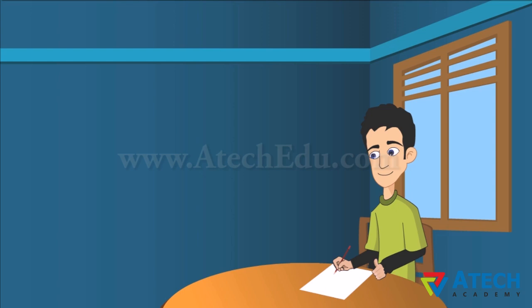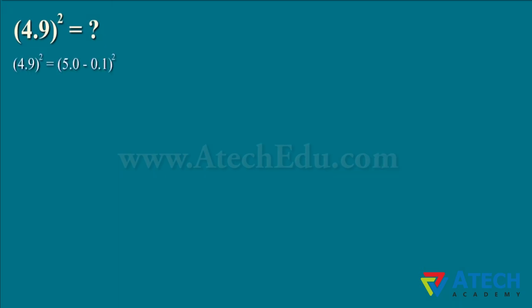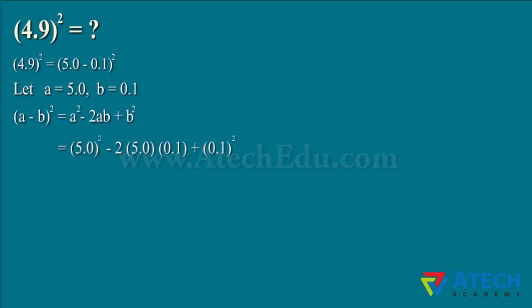Rahul is puzzled as to how to find the square of 4.9. Let us help him out. 4.9² can be written as (5.0 − 0.1)². Let A equal 5.0 and B equal 0.1. Upon applying the standard identity (A − B)² equals A² − 2AB + B², and putting in the values of A and B, we get 24.01.